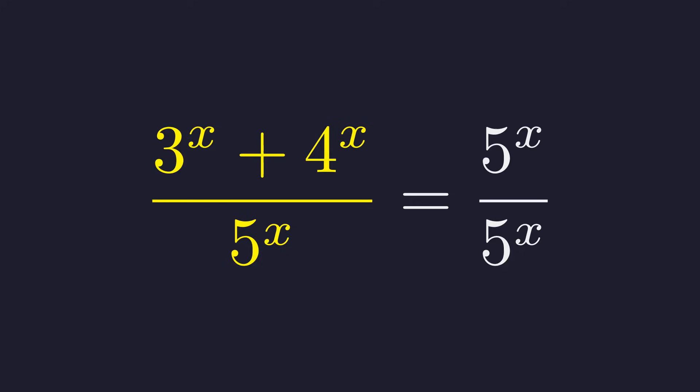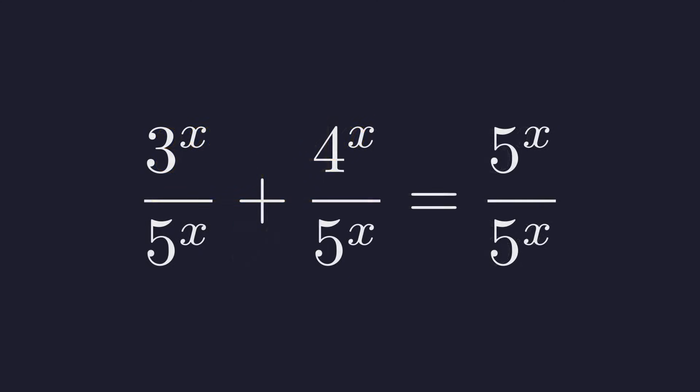The fraction on the left can be split into two separate terms. Splitting the fraction gives us 3 to the x over 5 to the x plus 4 to the x over 5 to the x.